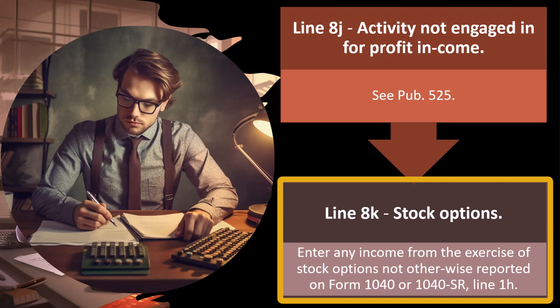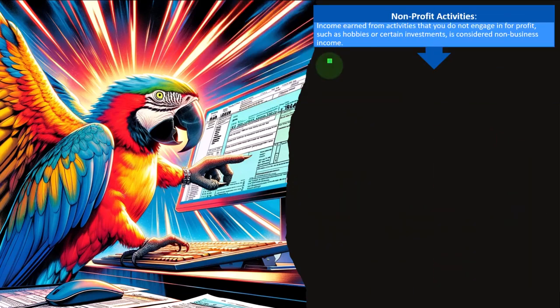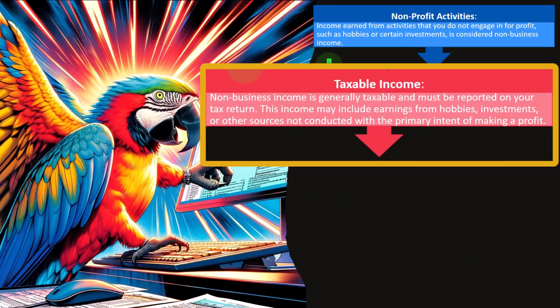Line 8K — stock options. Enter any income from the exercise of stock options not otherwise reported on Form 1040 or 1040-SR, line 1H. Non-profit activity income from activities you do not engage in for profit — such as hobbies or certain investments — is considered non-business income. Non-business income is generally taxable and must be reported on your tax return.